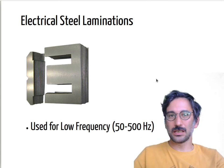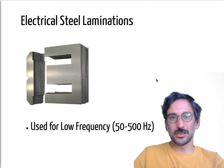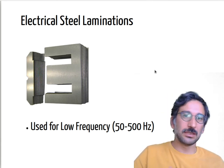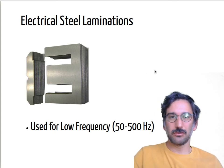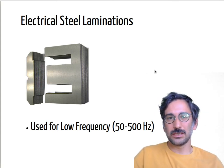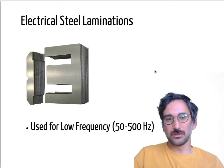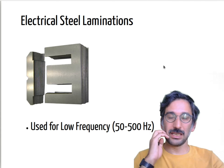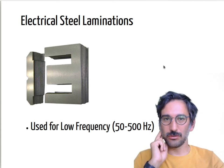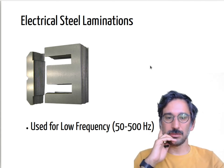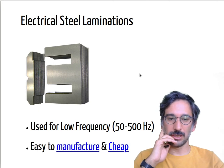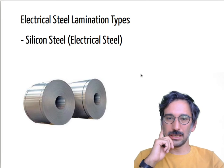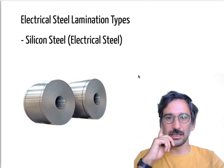Electrical steel laminations are mostly used for low-frequency applications like 50 to 500 Hz. But once you design a forward converter or flyback converter, you're dealing with much higher frequencies, so the core losses of those materials will dominate all the losses in your converter. They are not really used for power electronics applications.